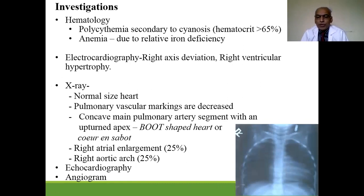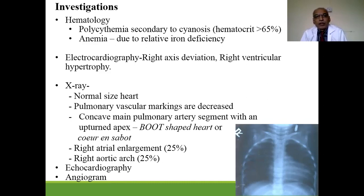Investigations for tetralogy of Fallot include hemoglobin estimation, which shows polycythemia due to cyanosis, and also anemia due to relative iron deficiency. ECG shows right axis deviation and right ventricular hypertrophy. Chest X-ray shows normal heart size, decreased pulmonary vascular markings, and a very typical shape of the heart.